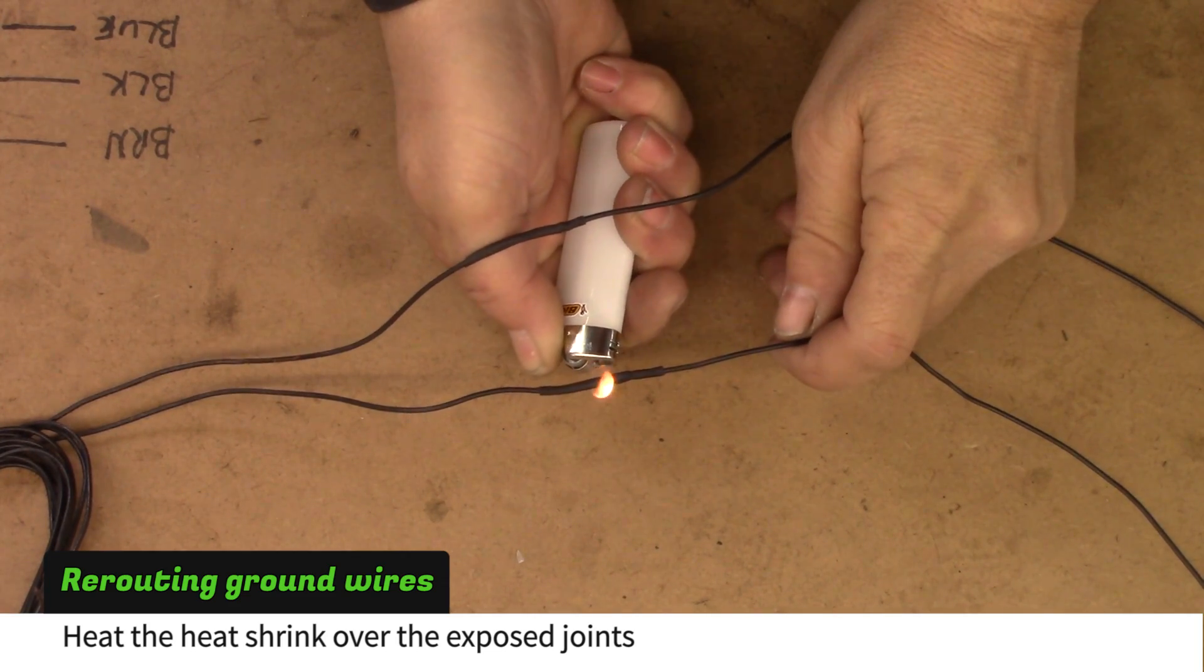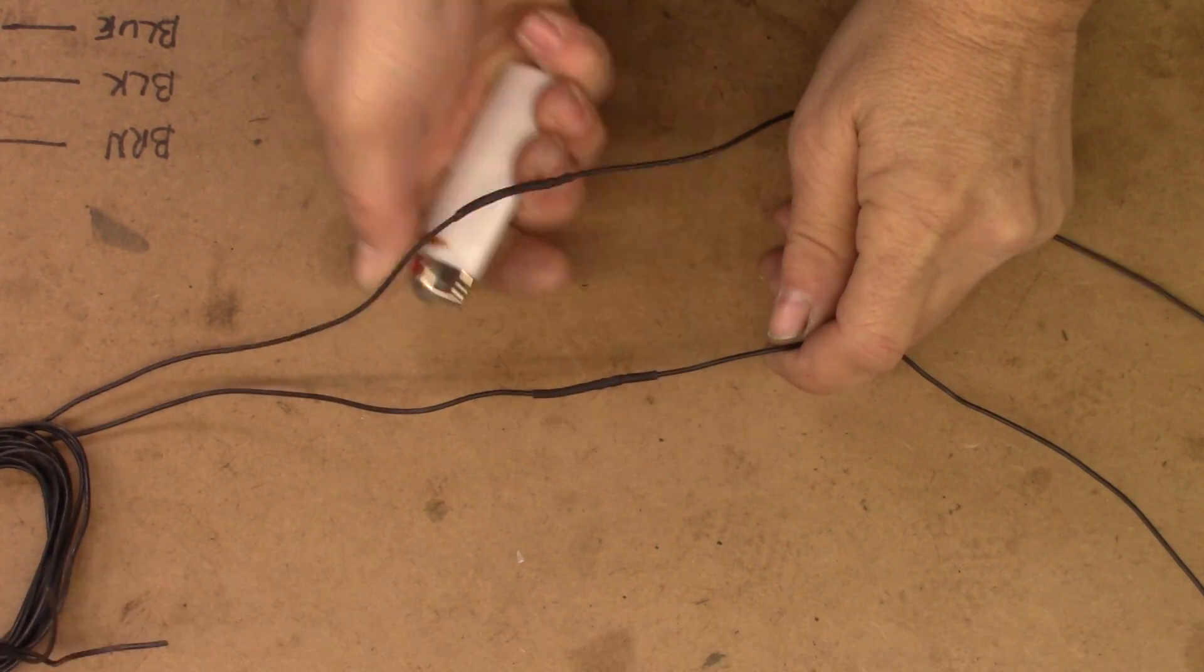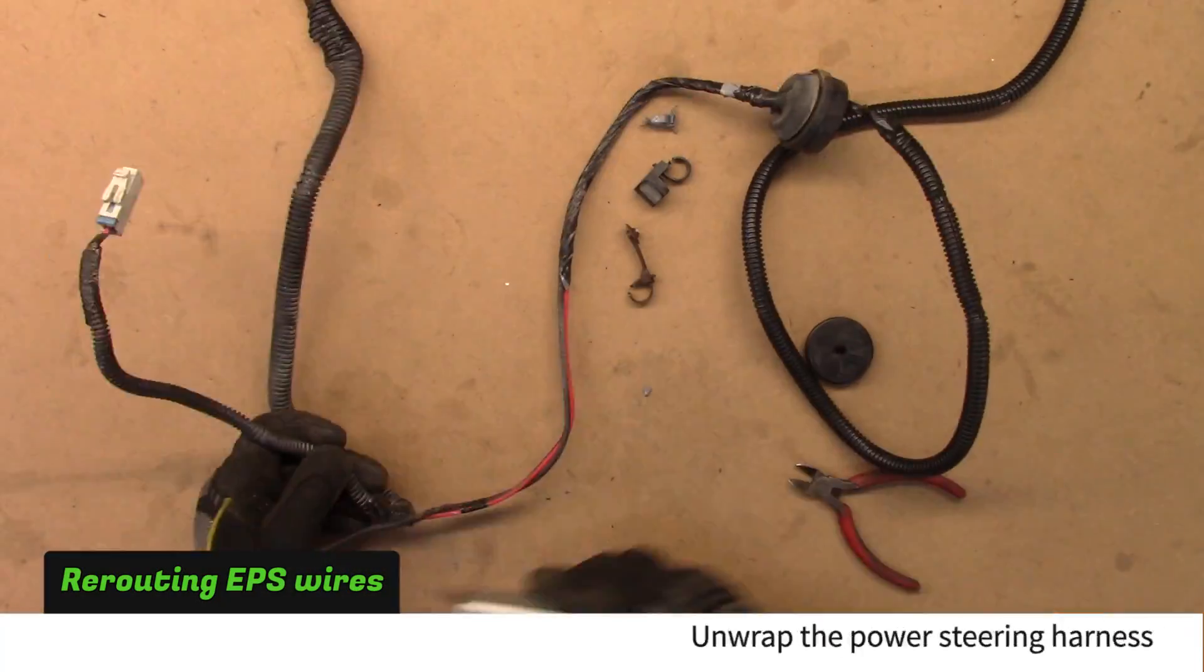Route these wires toward the fuse box. Unroute the power steering harness.